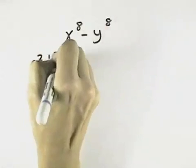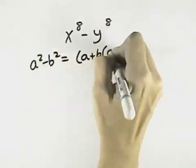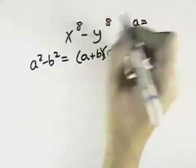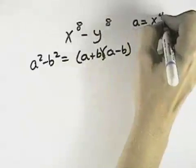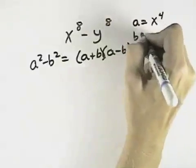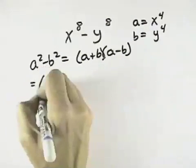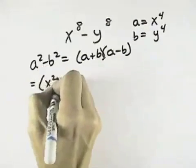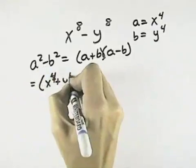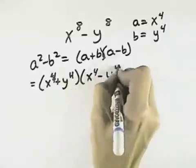Since a squared minus b squared equals the sum and difference of their square roots, we need to identify what a and b are. a would be the square root of our first term, which would be x to the fourth, dividing the exponent by 2. And b would be the square root of the last term, which would be y to the fourth. So we can break it down into x to the fourth plus y to the fourth, times x to the fourth minus y to the fourth.